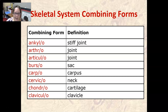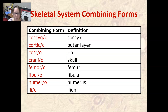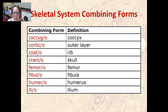Bursa means sac. Carpo means carpus, which are your wrist bones. Cervico means neck. Chondro means cartilage. Claviculo means clavicle. Coccygo means coccyx, which is basically your tailbone. Cortico means outer layer, as in cortex.